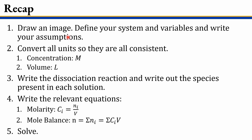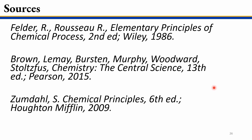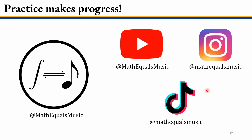Let's recap what we did. First we drew an image to visualize the problem, defined our system variables, and wrote down our assumptions — volumes are additive. Then we converted all units to be consistent: molarity for concentration and liters for volume. We wrote the dissociation reactions and identified all species. We applied the molarity equation and performed a mole balance, adding moles from each solution. Finally, we solved for the concentration of each species. That's it for this video — hope you learned something! Check out these sources to study more on your own, follow me on my socials, and remember: practice makes progress.